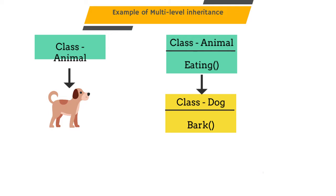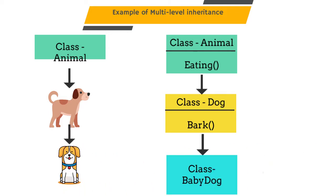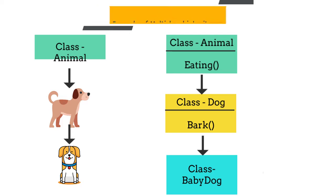We will again create one child class called BabyDog class which will inherit its property from the Dog class. Now, BabyDog class can use the functions of both the Animal class as well as the Dog class — that is, it can use both the methods: eating as well as bark.